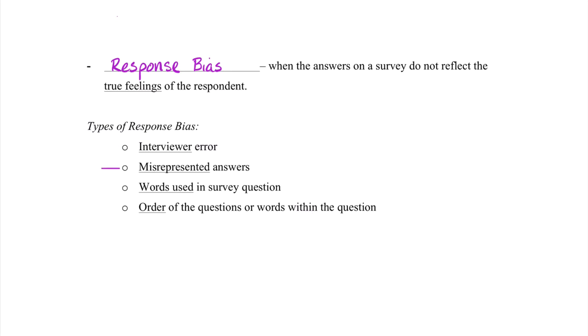Next would be misrepresented answers, where our respondent does not answer something truthfully or as straightforward as what we want. Third would be the words used in a survey question that can throw people off, and this leads to some sort of response bias. And last would be the order of the questions, or the words within the question, that can lead someone to create a response bias. For example, the way I word a question makes people feel guilty, so they don't answer honestly. Instead, that leads to misrepresented answers, but it started with the words within the question that led to the response bias.